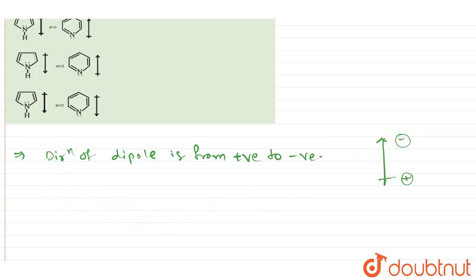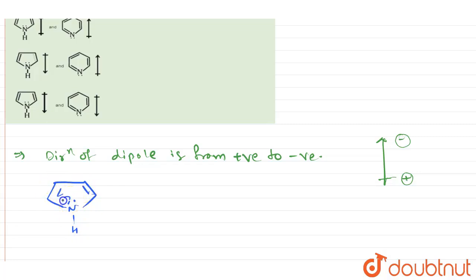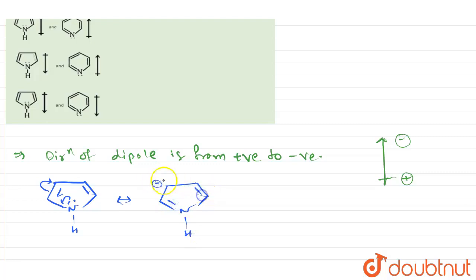Now I will start with the structure of pyrrole. So the structure of pyrrole is this. What happens is the lone pair present on nitrogen will come over here and the double bond will shift, forming a negative charge over here. So by resonance, we have the structure.